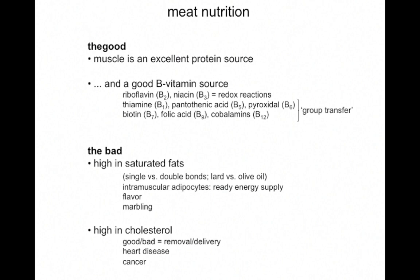The bad, of course — there's always a bad side — is that meat can be high in saturated fats. What are saturated fats? Single versus double bonds along the fatty acid chain — if you don't remember, go back to the first lecture. The chemical ramification of saturation is that we get solid fats: saturated fats with single bonds form linear chains that pack together nicely, giving high melting temperatures and forming solids at room temperature — that's lard, animal fat. Vegetable fats are higher in unsaturated fats; those double bonds put a kink in the molecule, they don't pack together as well, and have a lower melting temperature.